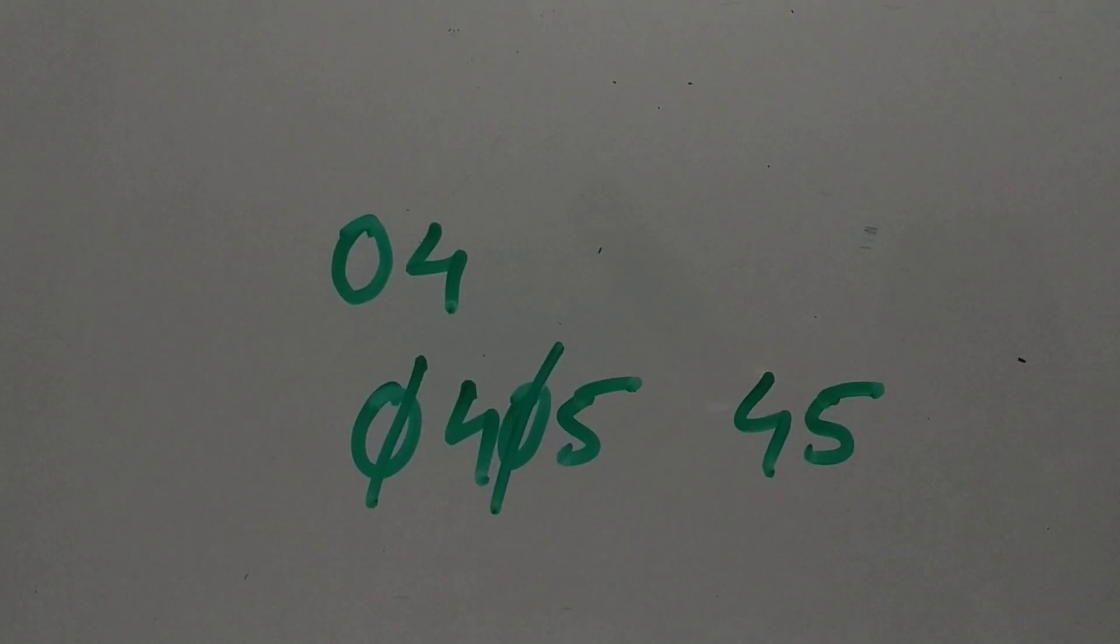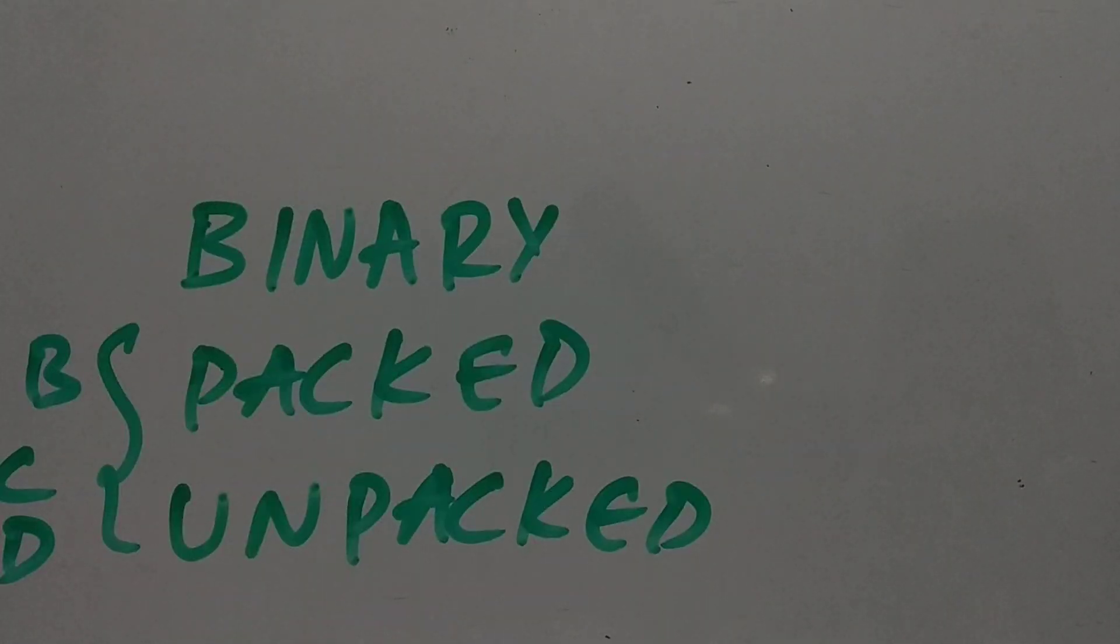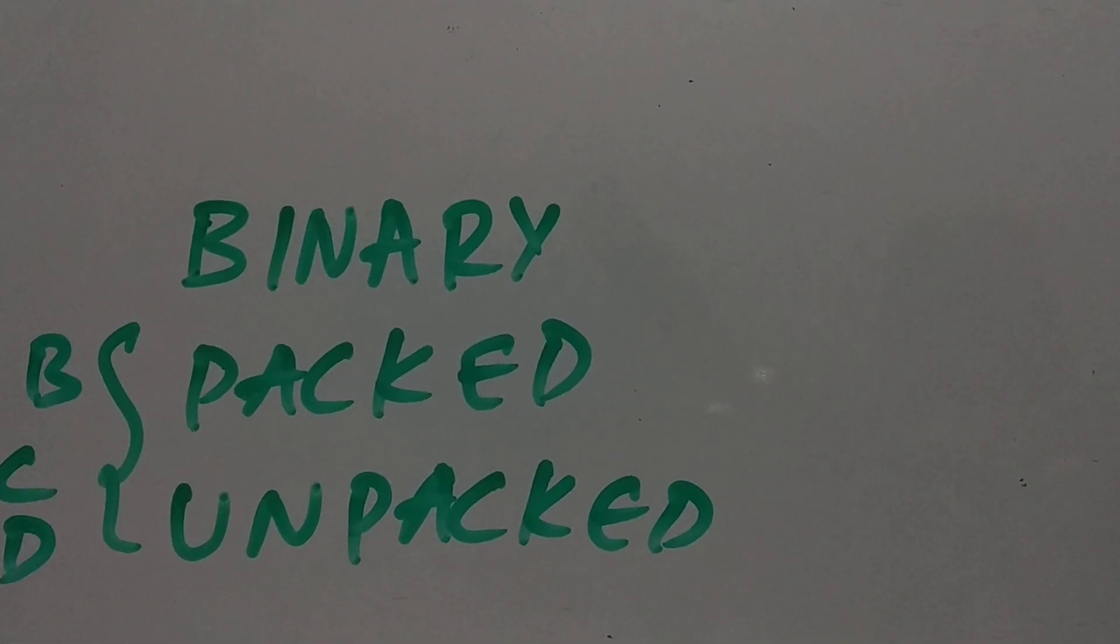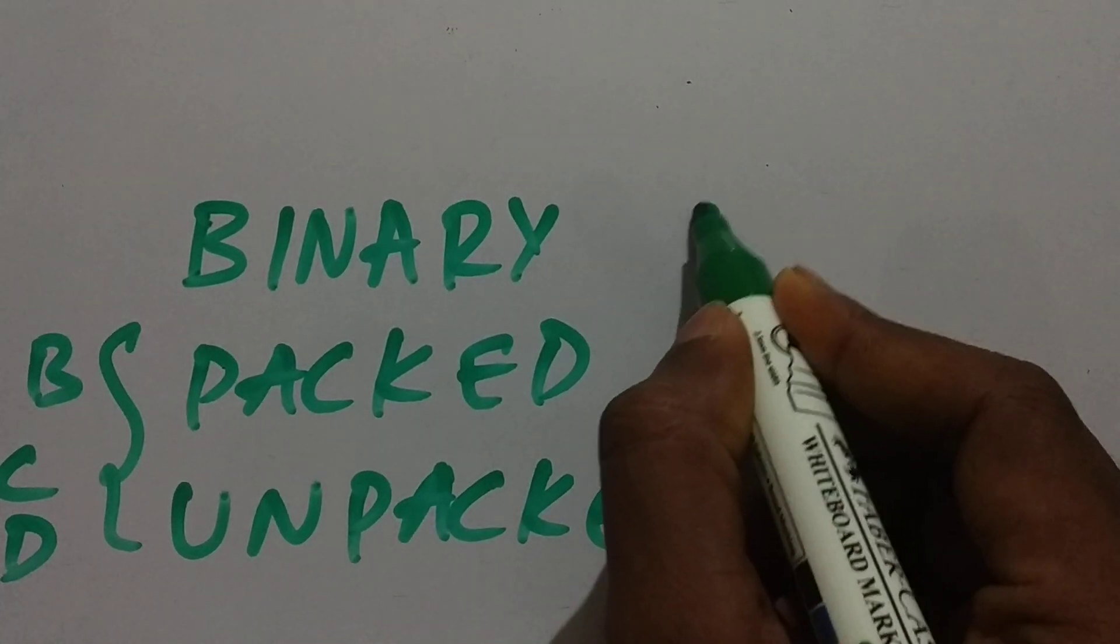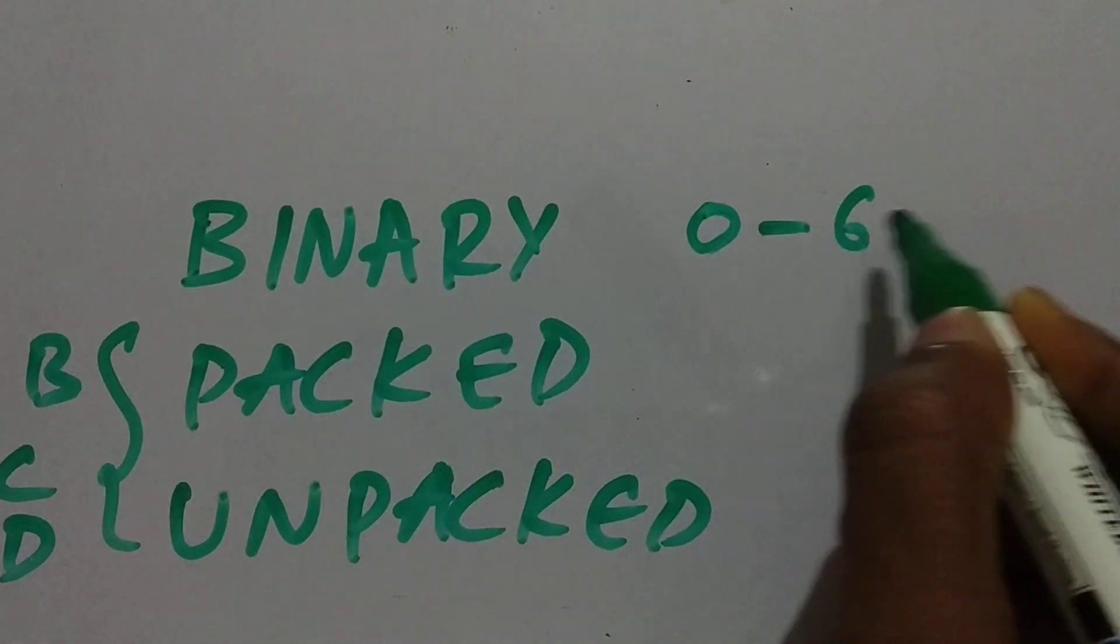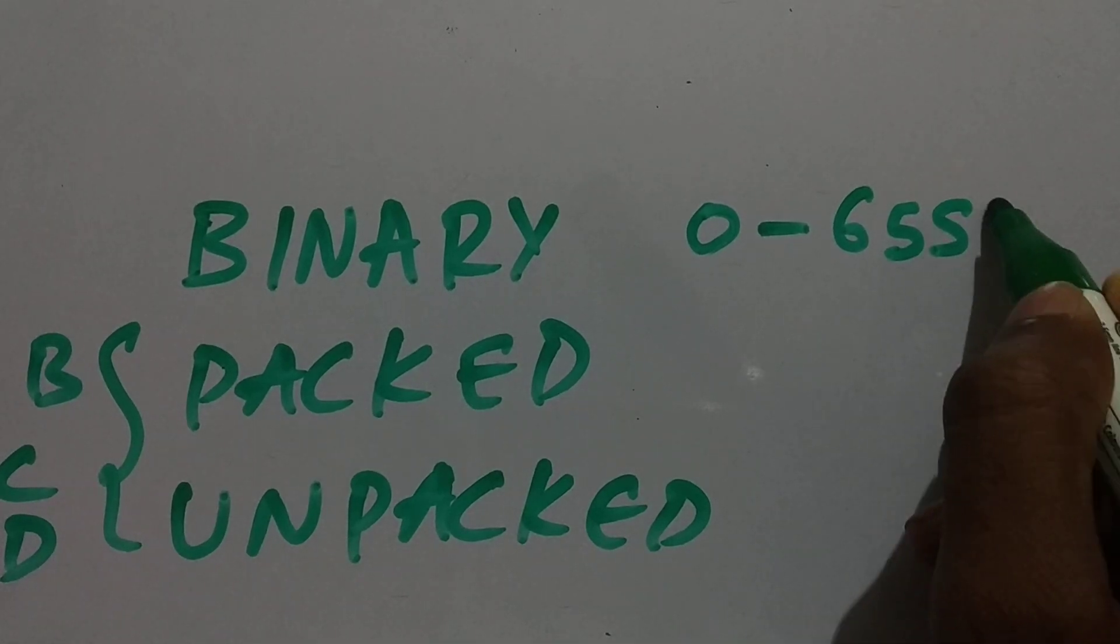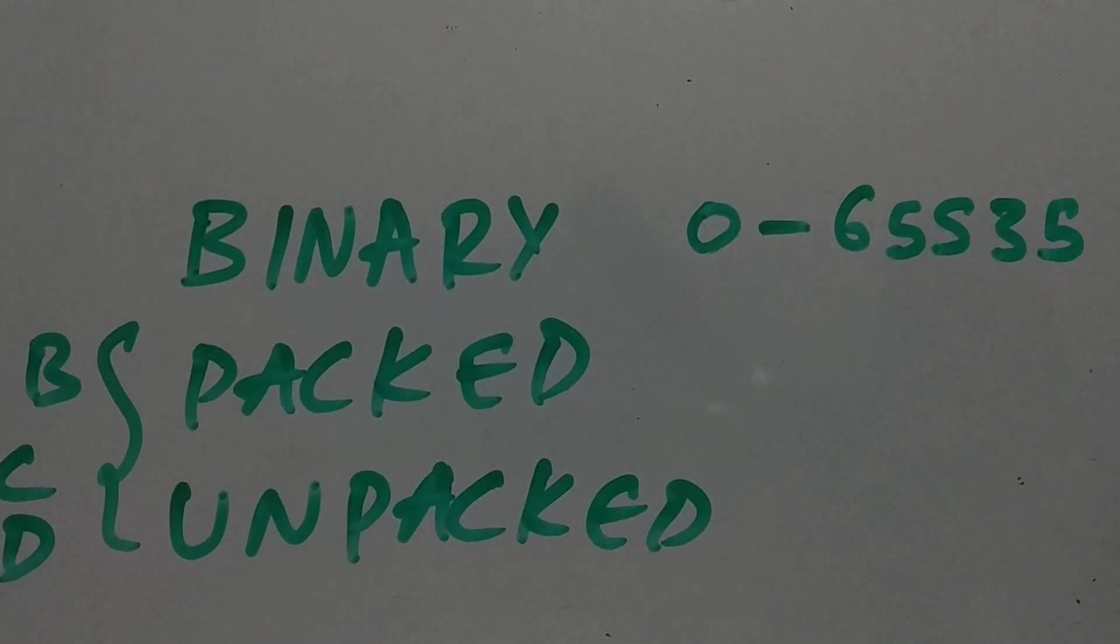Now I'm going to give you the effects of what's happening to the range when we use unpacked, packed, and binary. For 16-bit binary, what will be the range? It will be from 0 to 65,535. That will be the range we can go using 16 bits.